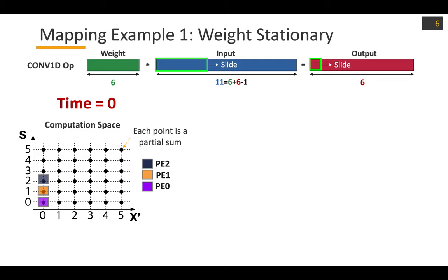Let's take a look at an example mapping. In this example we will use the same target application CONV1D and have three PEs. In this computation space, we are showing the computation mapping according to each PE using colors. P0 takes partial sum (0,0), P1 takes partial sum (0,1), and P2 takes partial sum (0,2).